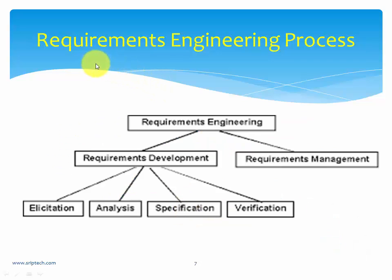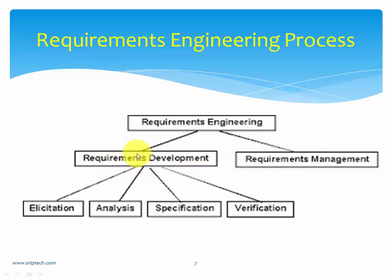The requirements engineering process has two main stages. The first stage is called requirements development, and the second stage is called requirements management. We are not going to cover requirements management in this part — there will be a separate video series on it. We will focus on requirements development, which in turn has four stages: elicitation, analysis, specification, and verification. We shall see one by one what exactly happens in each of these stages.